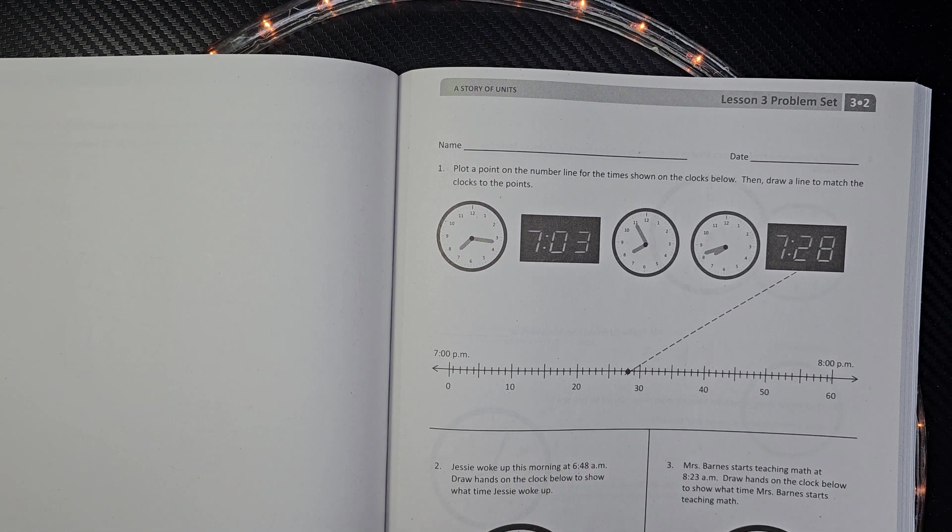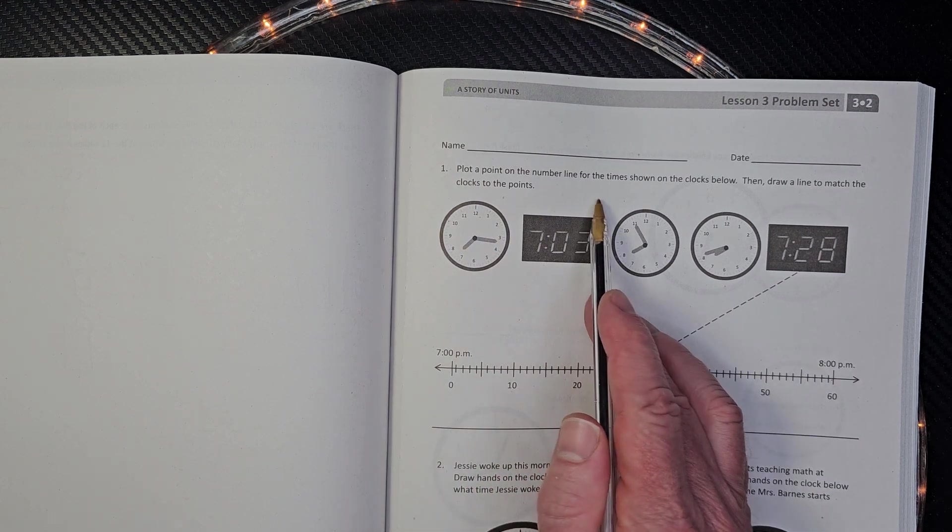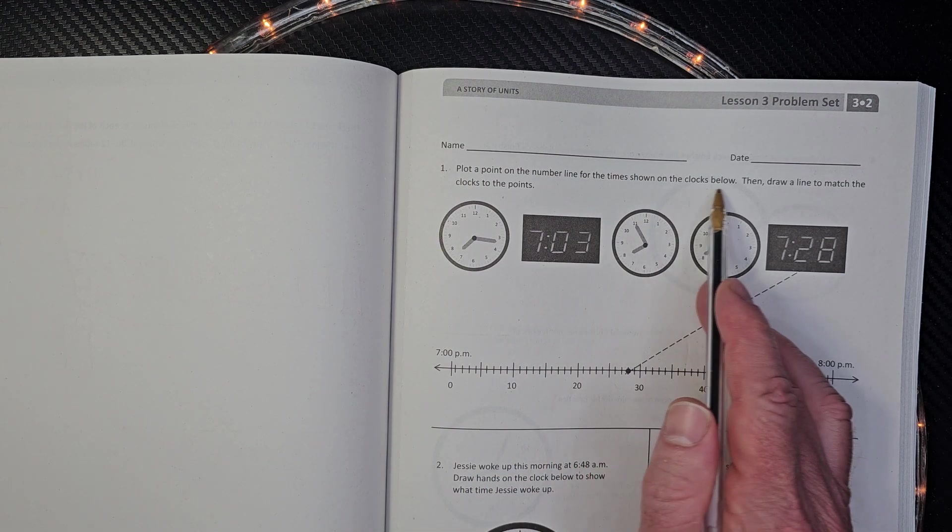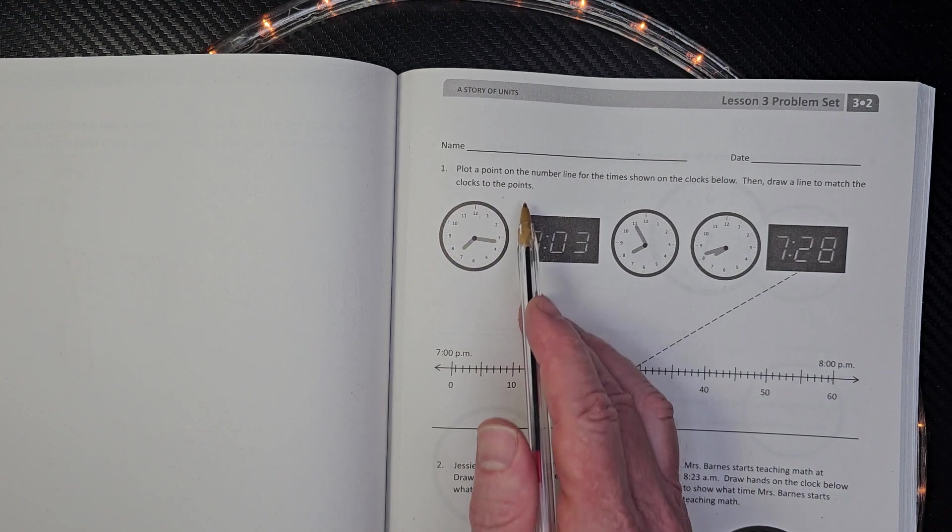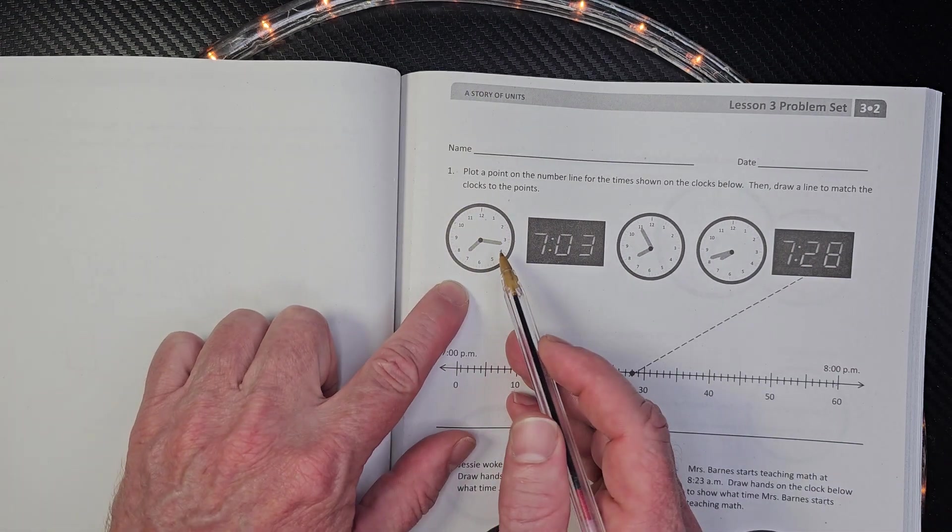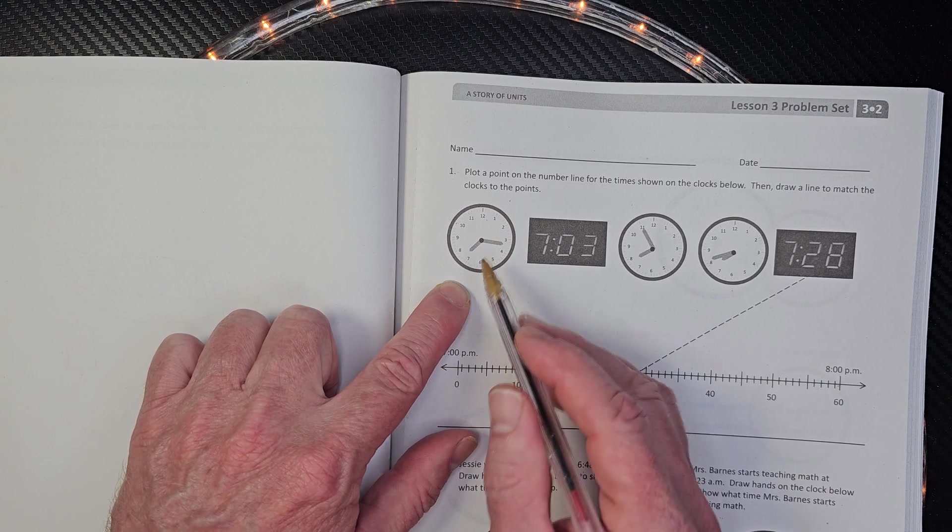All right. Now we are on to the problem set. Plot a point on the number line for the times shown on the clock below. Then draw the line to match the clocks to the points. Now, yes.